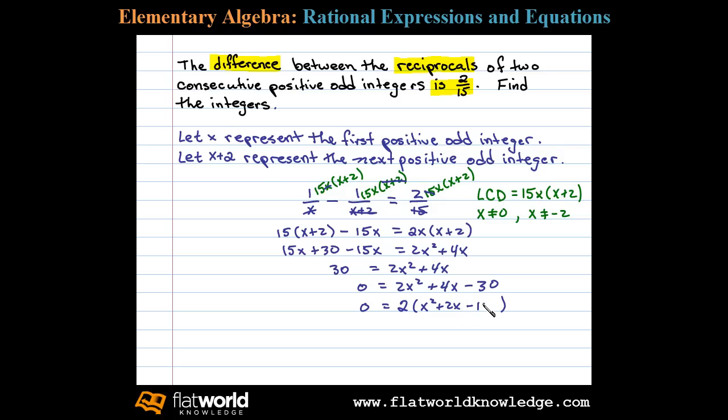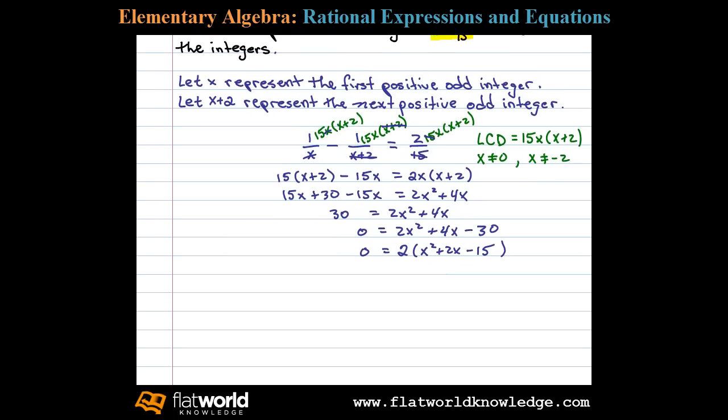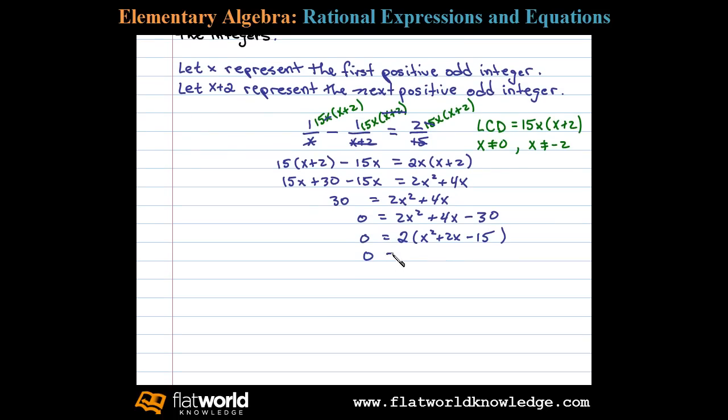Factoring the trinomial, we have X squared factors as X times X. The factors of 15 are 3 and 5. In this case, we'll use X plus 5 times X minus 3. Positive 5 times negative 3 is negative 15, and 5X minus 3X is 2X.